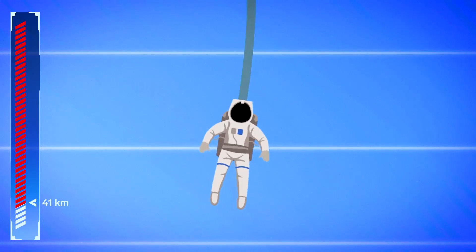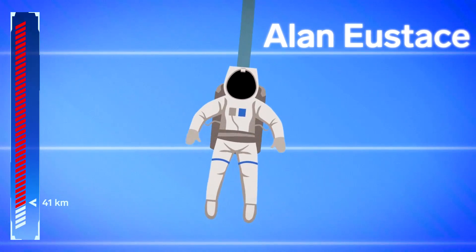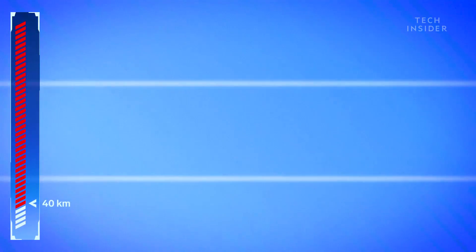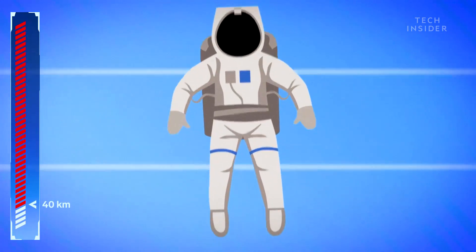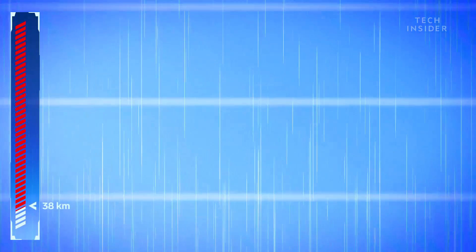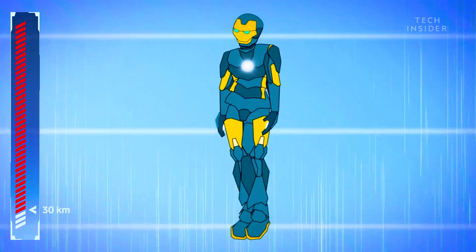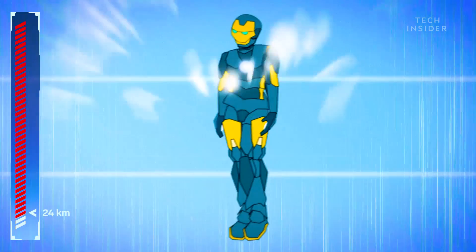In 2014, Alan Eustace wore a pressurized space suit as he rode a balloon up to this height. He broke the sound barrier on his way down before deploying his parachute and landed about 15 minutes after the drop. But you'll be falling much faster than Eustace, about three times the speed of sound.